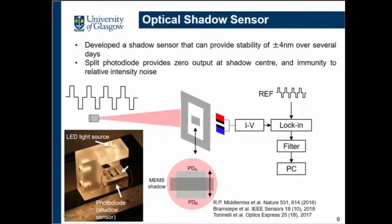Now that we have a highly sensitive proof mass, we need to match it with a very good displacement sensor. We use an optical shadow sensor, inspired by shadow sensors used in Advanced LIGO gravitational wave detectors. It is a simple system: you have your proof mass in between, you shine a modulated LED light from one end, and you have a split photodiode on the other end. The proof mass casts a shadow onto the split photodiode, and when the proof mass moves, the shadow modulates. You read that modulation using a digitally implemented lock-in.